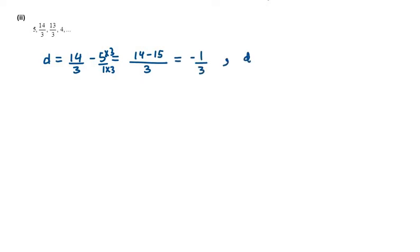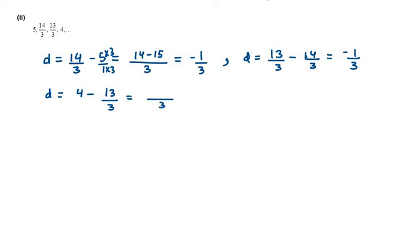Now let's check at the other two points. It is 13/3 minus 14/3, which gives minus 1/3. At the last point it is 4 minus 13/3. Taking LCM of 3 and multiplying 3 with the first term, it will be 12 minus 13, giving minus 1/3. Again you can see at different points the common difference is the same: minus 1/3.